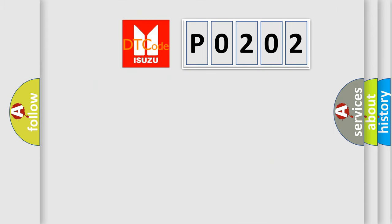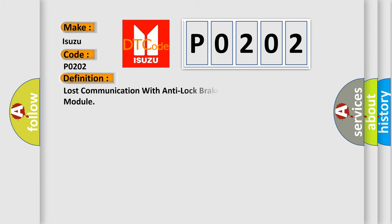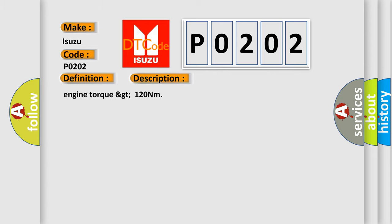So, what does the diagnostic trouble code P0202 interpret specifically for Isuzu car manufacturers? The basic definition is lost communication with anti-lock brake system ABS control module. This is a short description of this DTC code. Engine torque greater than 120 Nm.